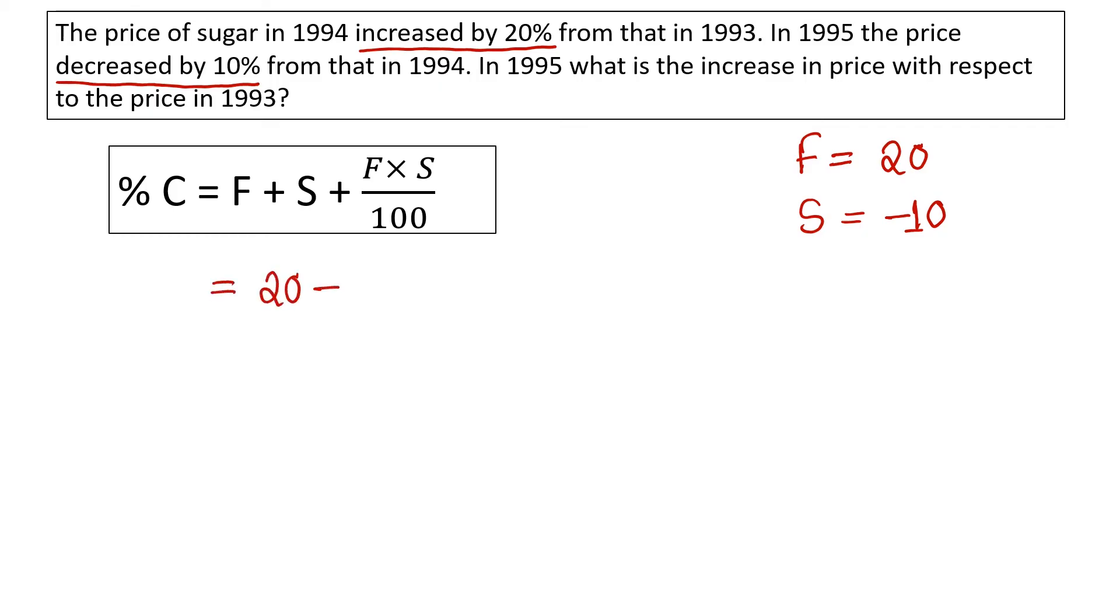So 20 minus 10 plus 20 into minus 10 divided by 100. It is calculated that 8 percent. This is the positive month price increase. So 1995 price total 8 percent received.